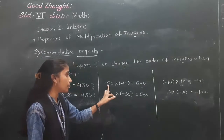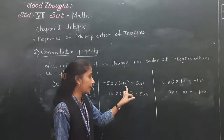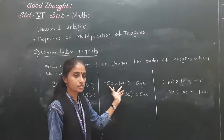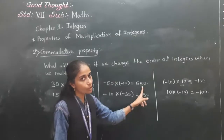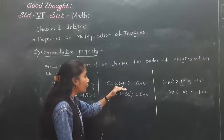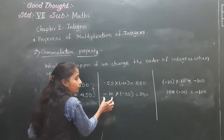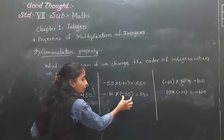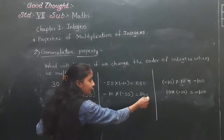See the next example: minus 55 into minus 10 — two negative integers. Their product will become positive: 550. Now we change the order: minus 10 into minus 55. The multiplication will be positive — 550. Product remains same.